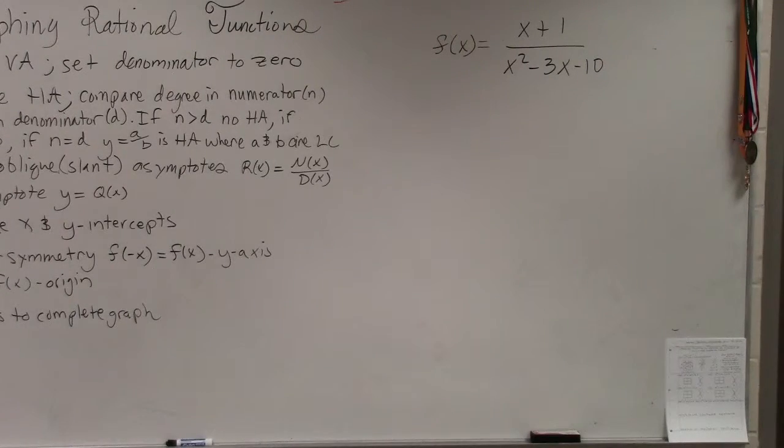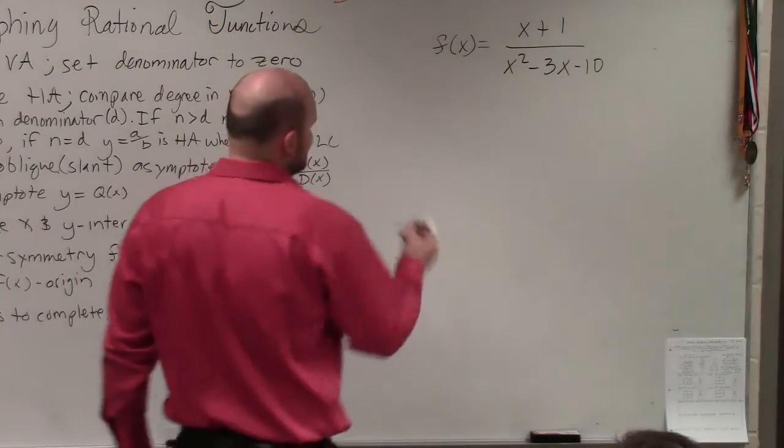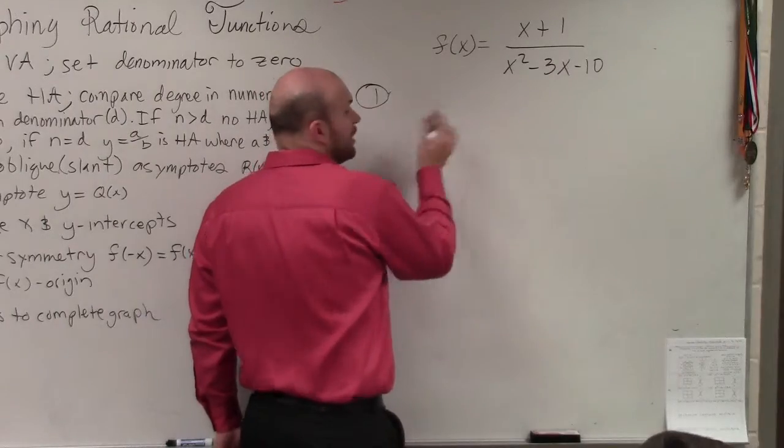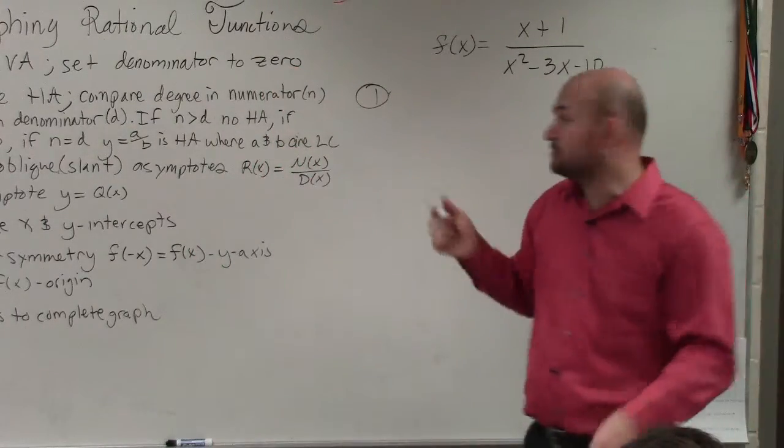I will go through everything again. Step number one is identifying the vertical asymptotes. All you need to do every single time is set the denominator equal to zero.